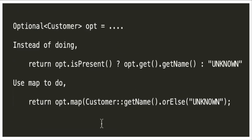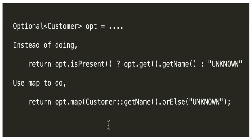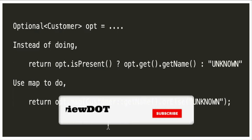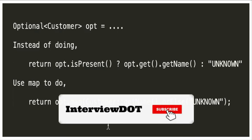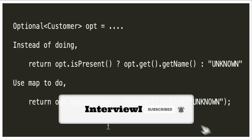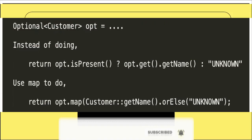Please remember these two rules — they will be helpful. I'd like to give one more reminder: instead of using get(), use the map method, because map already handles the isPresent check internally. Hope this information is helpful. All the best for your career — please subscribe to the channel. Thank you.